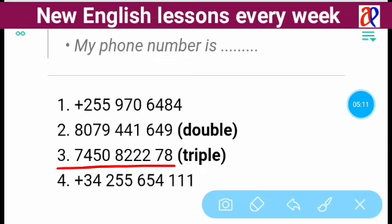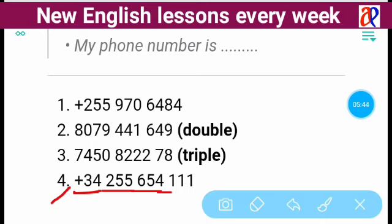So the third example can be said two ways: seven four five zero eight two two two seven eight, or seven four five zero eight triple two seven eight. Now let's see the fourth example, which has a combination of plus, double, and triple. This number is plus three four two five five six five four one one one.